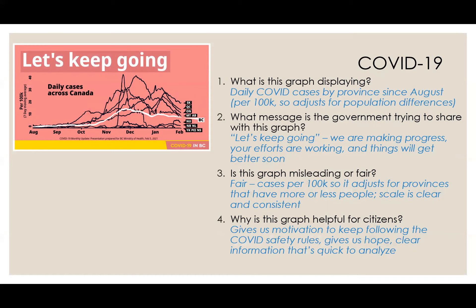Why is this graph helpful for citizens? I think it gives us motivation to keep following the COVID safety rules. It gives us hope that things might get better soon. And it's clear information that's very quick to analyze. I found this going through my Instagram feed — it's just a quick reminder of how we're doing compared to everyone else, some updated information, and some hope that things will get better soon. This is a great example of when graphs can be super helpful in the media, because it summarizes the story simply, catches your eye, and explains things clearly.